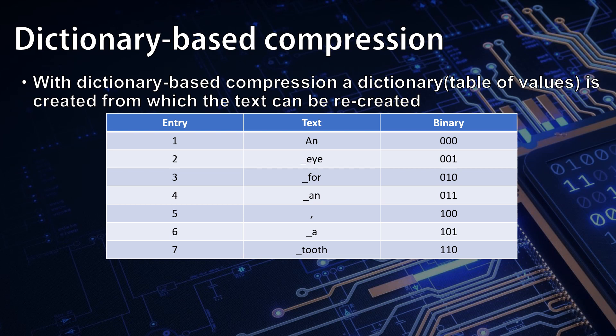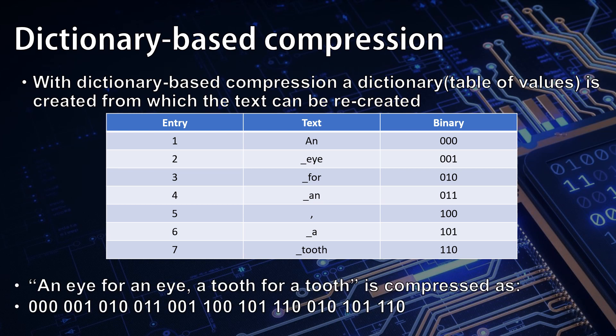As we've got less than eight overall terms, we only need three bits to represent each in binary. And so the phrase 'an eye for an eye, a tooth for a tooth' can be compressed as 000, 001, 010, 011, 001, 110, 001, and so on through the sequence. You wouldn't need to put spaces in there — I just did that so you could see easily which section from the table we were actually using.